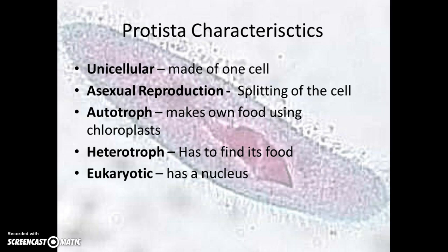To be a protist, you can be either an autotroph or a heterotroph. Some protists are autotrophs, so they make their own food and will appear green in color. If you look under the microscope and the single-celled organism is green, it's an autotroph. If it's not green and appears to be searching for food, then it's a heterotroph that has to go out and find its food. There are lots of different ways that protists move around to find food.